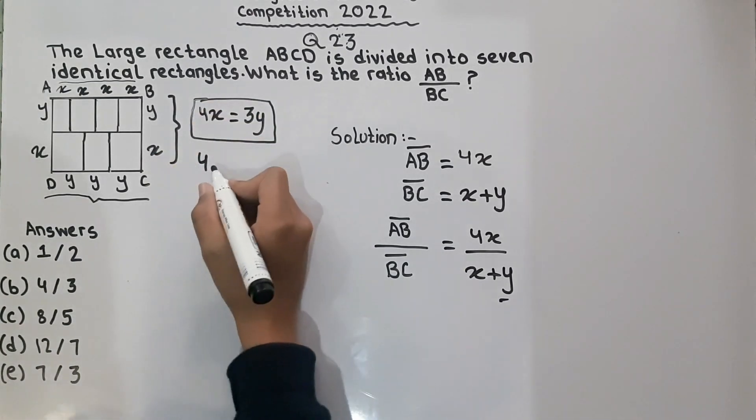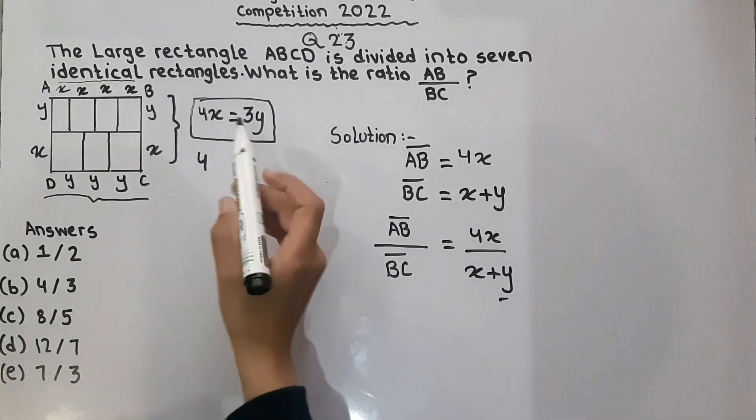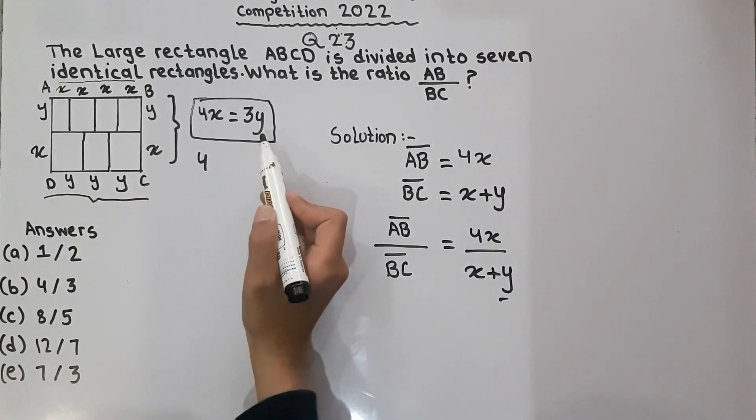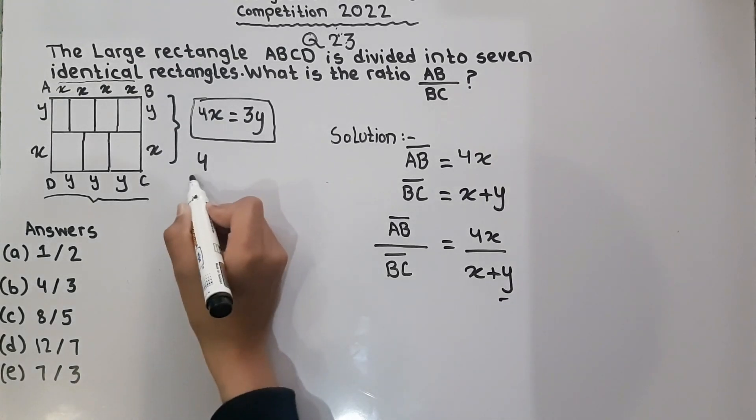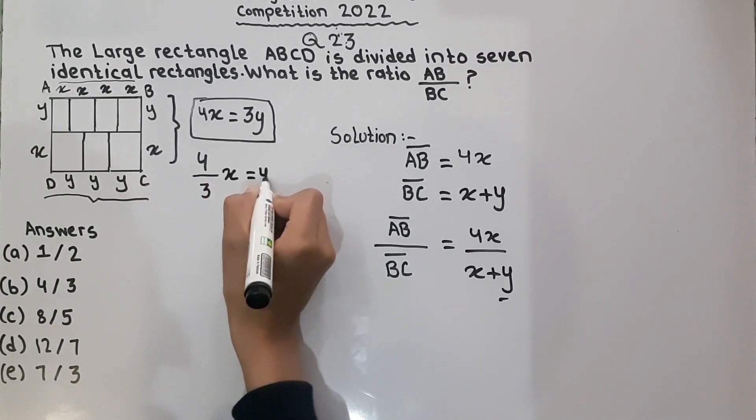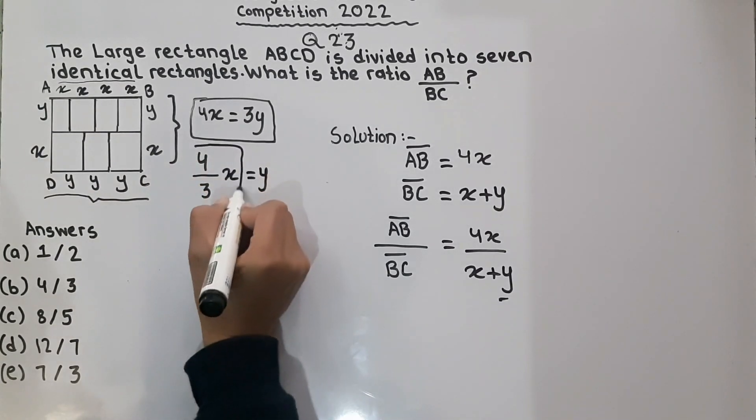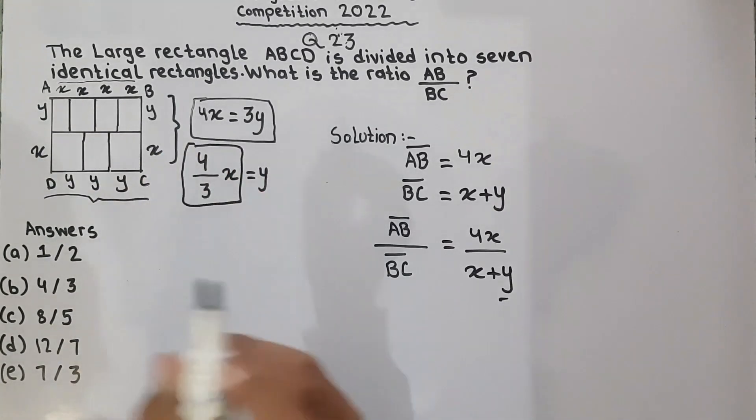4 multiply by. So the 3 here is multiplying with X. We will divide it with 4. And X will come as it is. It's equal to Y. So we know that 4 over 3X is equal to Y. And we will put this value here.